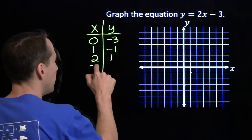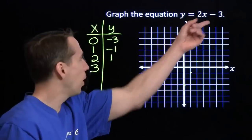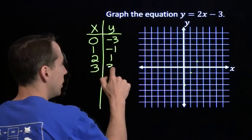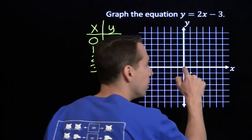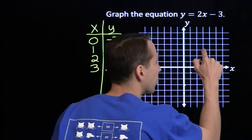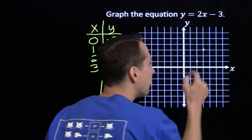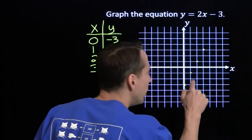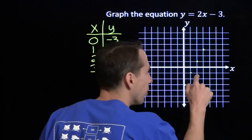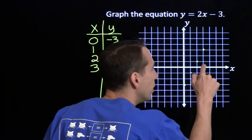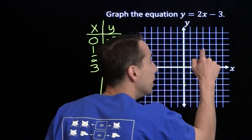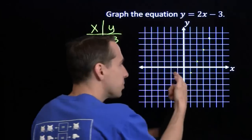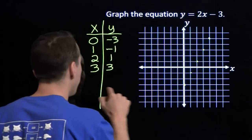If I drop in x equals 3, I'll get y is 6 minus 3, gives us 3. The point (3, 3) is on the graph. We can see the pattern here: go over 1, up 2. Right 1, up 2. We expect the next point in this pattern to be (4, 5).